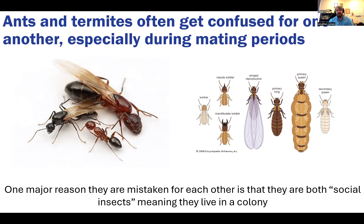These winged reproductives for ants and termites look very similar when they're in flight. They're often found around lights, particularly at night. When people see one or the other, they may freak out thinking they have termites when really they're seeing ants, or believe they have ants when they have termites. When they're flying around they look almost identical in color and shape. It's only when we get up close that we can start to parse out who we're looking at.